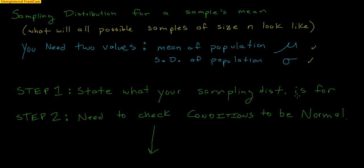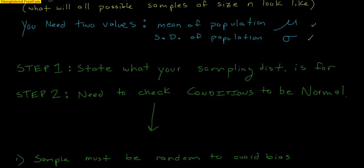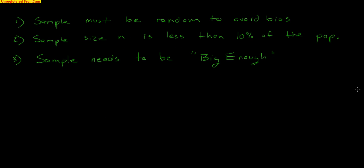Next, we need to check our conditions. Just like with proportions, we have three conditions. First, the sample must be random to avoid bias. Second, the sample n must be less than 10% of the population — that's important for calculating standard deviation, because if independence is violated, standard deviation gets tricky. So we have to make sure our sample size is less than 10% of the population.